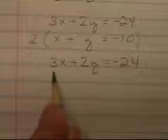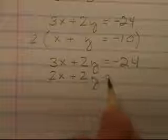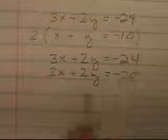Let's choose to eliminate the y, so I will multiply the bottom equation by 2. This will be 3x. The top equation will stay unchanged. 3x plus 2y equals negative 24 and this will become 2x plus 2y equals negative 20.